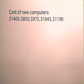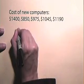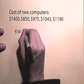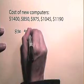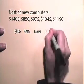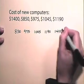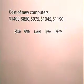First thing we need to do is order the numbers. So we have $850, $975, $1,045, $1,190, and $1,400. All of which are dollar amounts, of course.